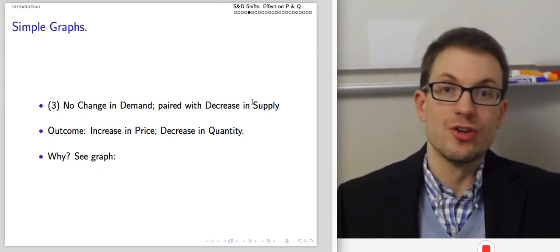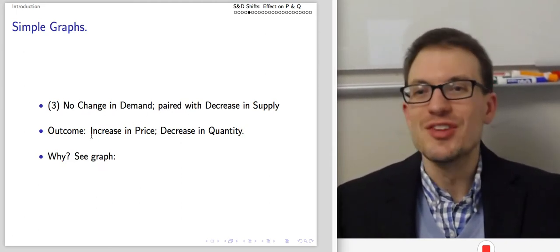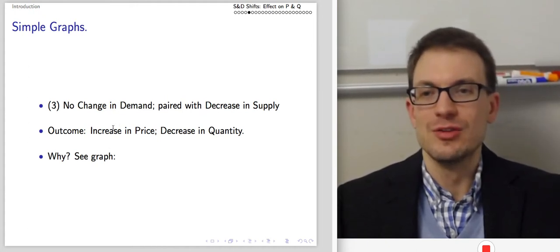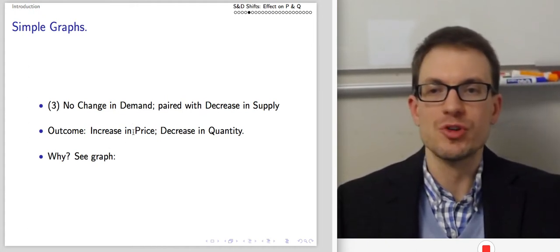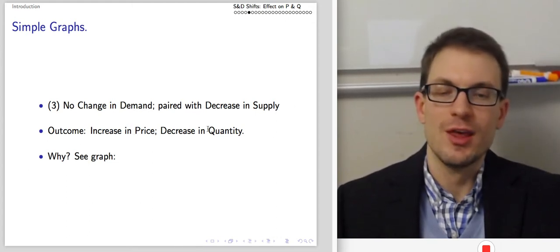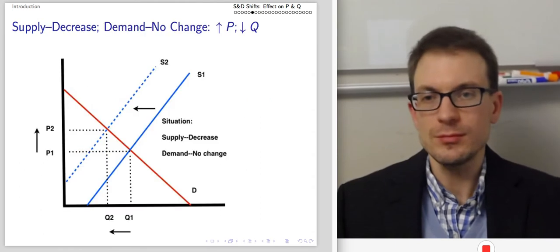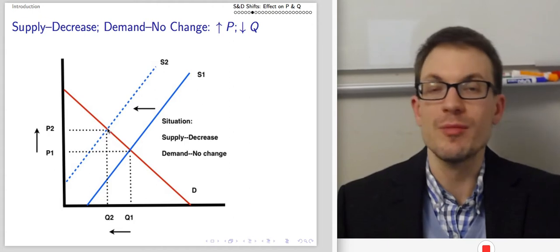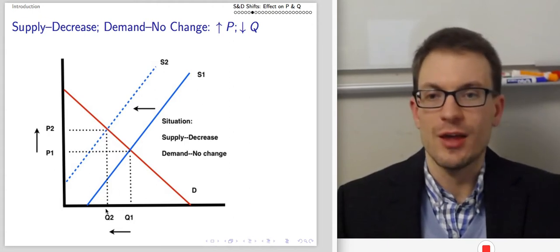What if there's no change in demand, but there's a decrease in supply? Now there's increasing scarcity — there are fewer units available for consumers to buy. This is going to force the price upward, and we're going to get a smaller quantity. Here this is illustrated: a leftward shift of supply. The original equilibrium gives way to a new equilibrium with a higher price and a smaller quantity.